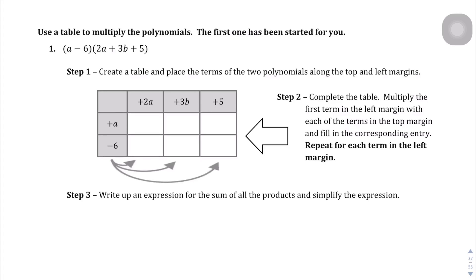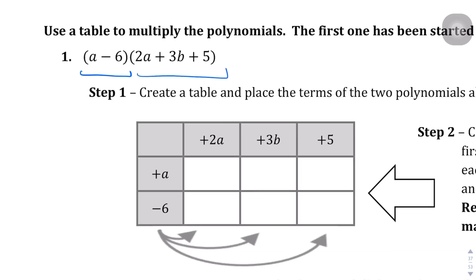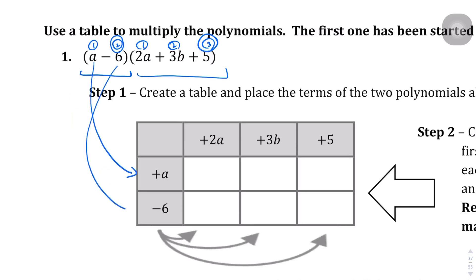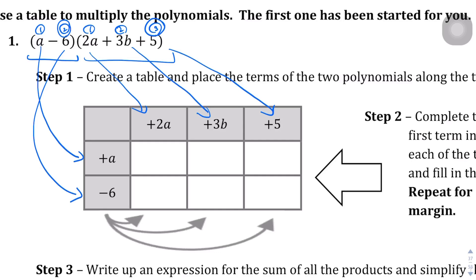We'll jump into question one. We have two polynomials: (a minus 6) and (2a plus 3b plus 5). We're going to make a 2 by 3 rectangle. You know it's 2 by 3 because the first polynomial has two terms and the second polynomial has three terms. Sure enough, we have the a and the minus 6 on one side, and the 2a, 3b, and 5 on the other. After drawing out this 2 by 3 rectangle, we multiply like a typical multiplication chart.